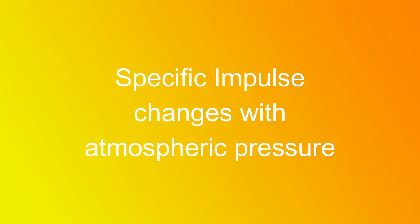It is important to note that specific impulse changes with atmospheric pressure, because the exhaust gas is pushing against the atmosphere, slowing the exhaust down, which reduces the thrust. Reduced thrust means a reduction in specific impulse. This means that no matter the rocket, it will always be more efficient in a vacuum.